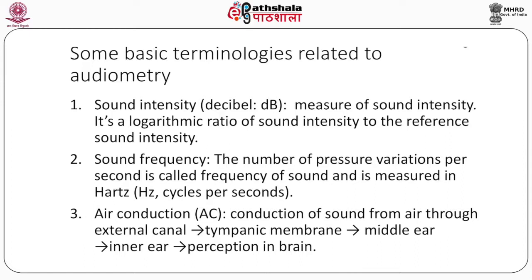A motorcycle produces around 95 decibel. Firecrackers and firearms are at 150 decibel and can cause ear damage. Second, sound frequency measured in hertz. When sound energy travels through air, atmospheric pressure varies periodically. The number of pressure variations per second is called frequency of sound and is measured in hertz or cycles per second.